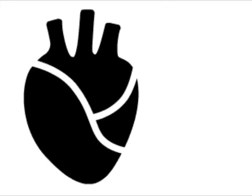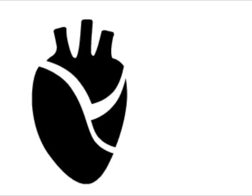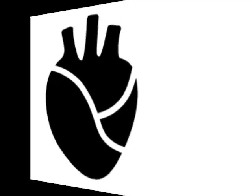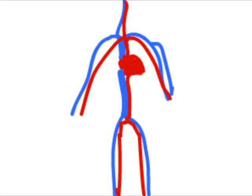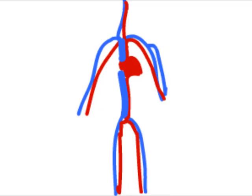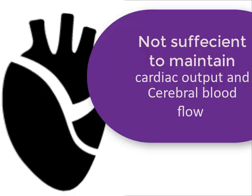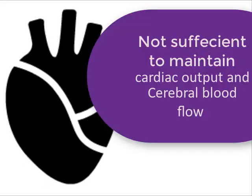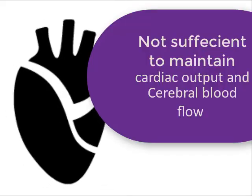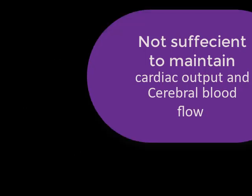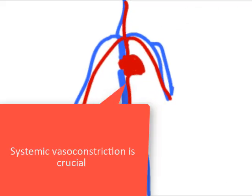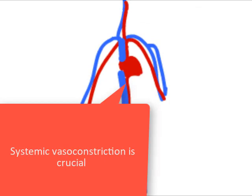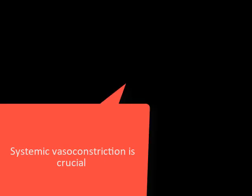Normally this deficit is compensated for by both an increase in heart rate and by the constriction of both resistance and capacitance blood vessels. An increase in heart rate alone is usually insufficient to maintain cardiac output and cerebral blood flow. Hence, systemic vasoconstriction is crucial for maintenance of adequate blood pressure.